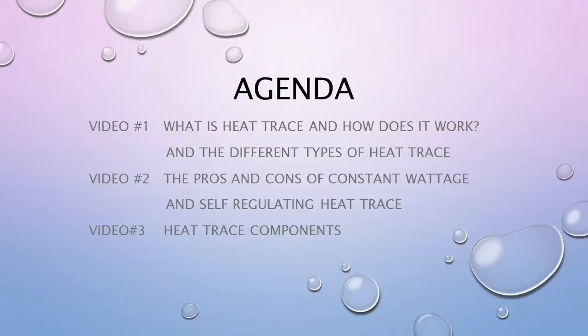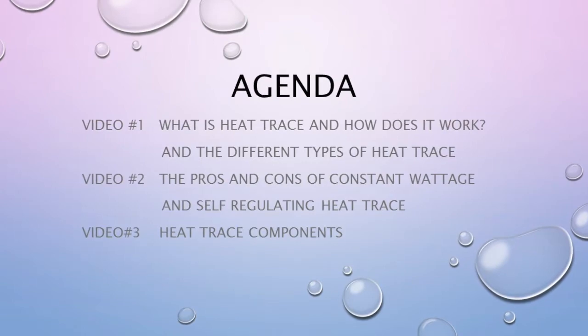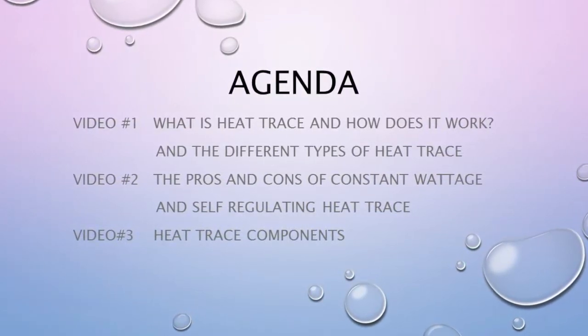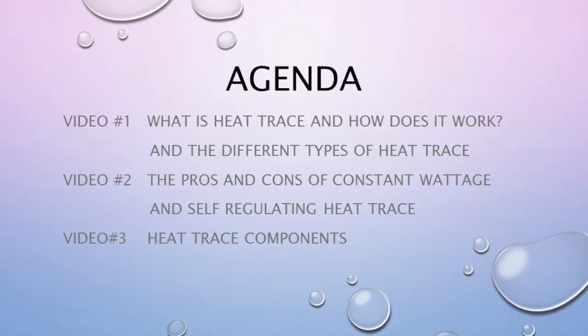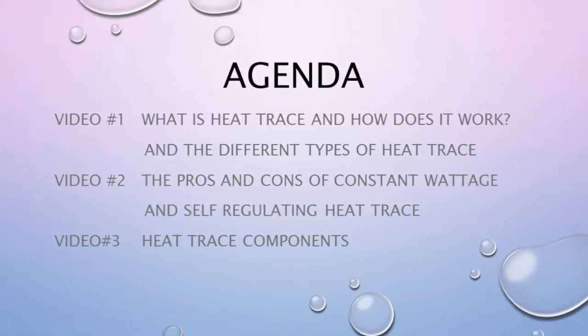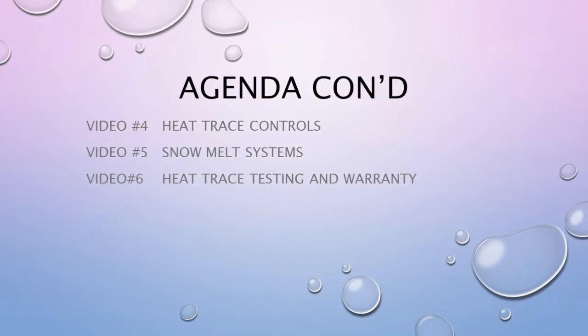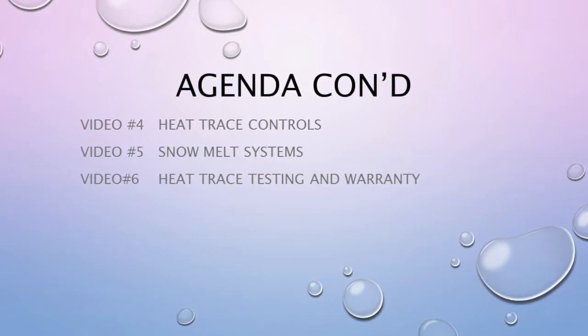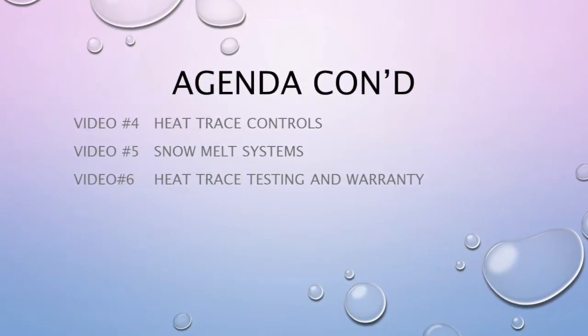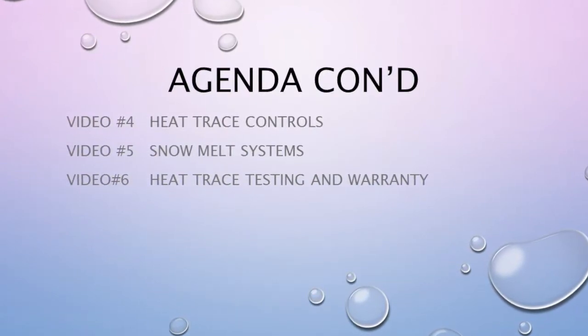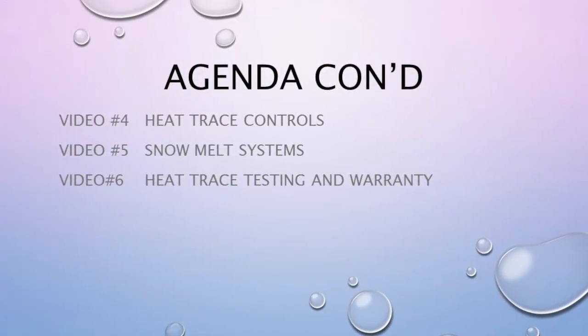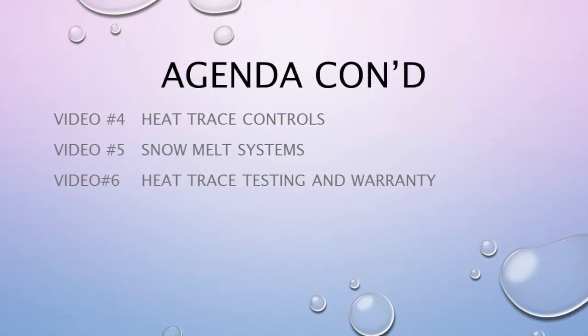Now let's discuss the different videos in the series. The first video is what Heat Trace is, how it works, and the different types of Heat Trace. The second video discusses the pros and cons of the different types. The third video dives into the Heat Trace components we use. The fourth video covers control methods and controllers. The fifth video switches gears to snow melt systems — both roof and gutter, and surface snow melt. And finally, the sixth video covers Heat Trace testing and warranties.